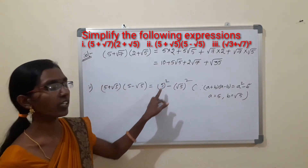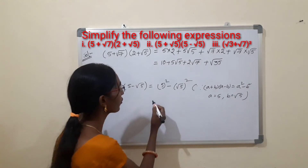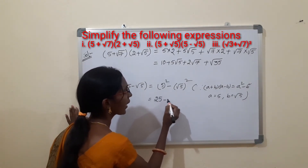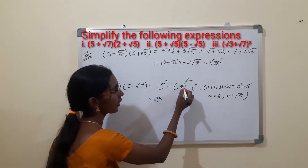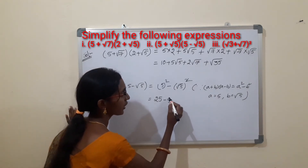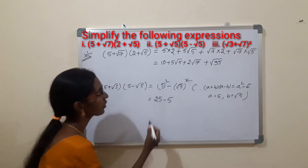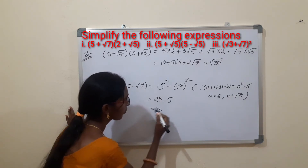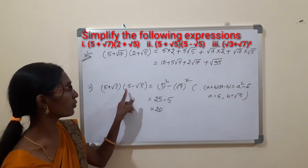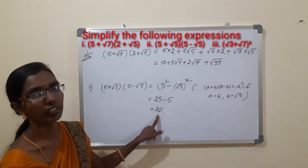Substituting: A² is 5² = 25, minus B² which is (√5)² = 5. The square root gets cancelled. So 25 minus 5 is 20. Therefore (5 + √5)(5 - √5) = 20.